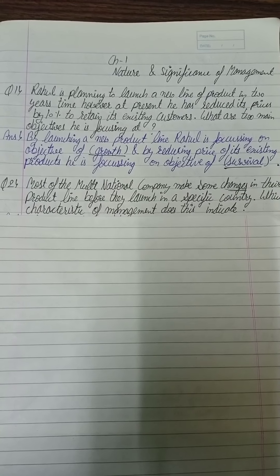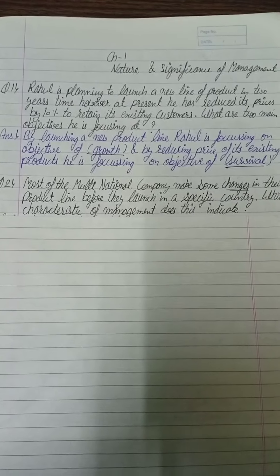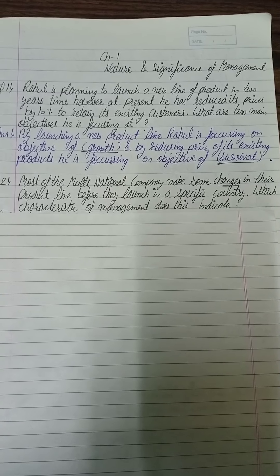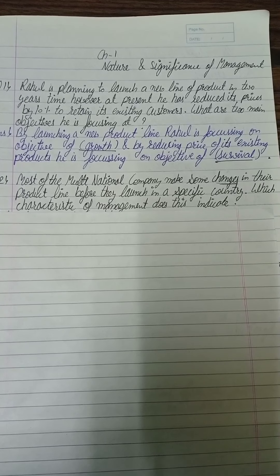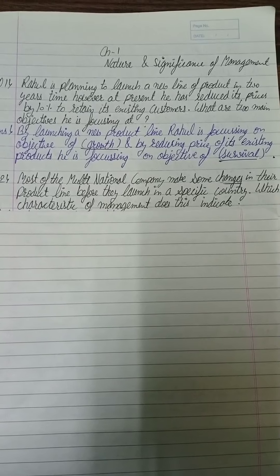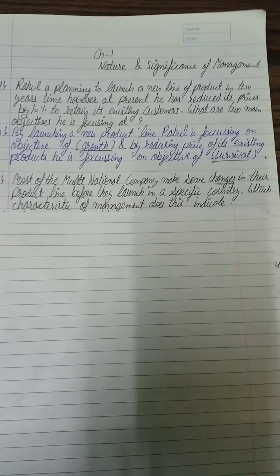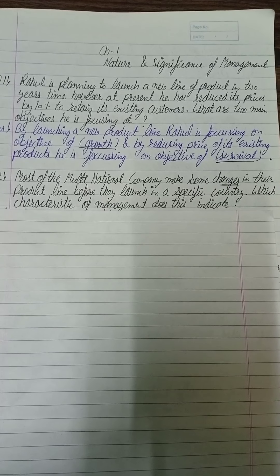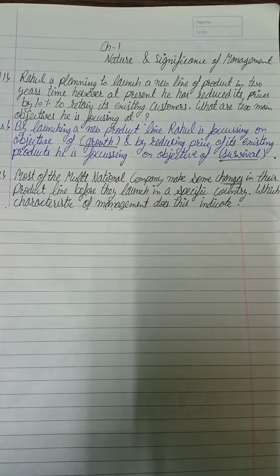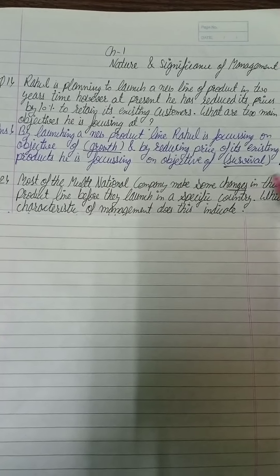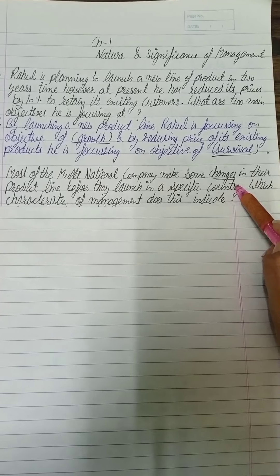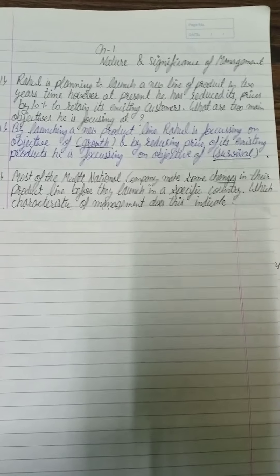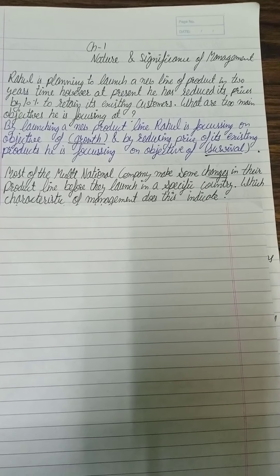Moving to the next question: Most multinational companies make changes in their product line before launching in a specific country. Which characteristic of management does this indicate? Here we need to identify the characteristic. A multinational company changes its product line according to the country it enters — the keyword here is 'change.' This indicates the dynamic nature of management, which keeps on changing.